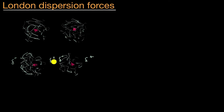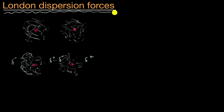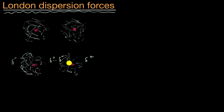We already had a randomly occurring dipole on the left-hand side, but then that would have induced a dipole on the right-hand side. A dipole is just when you have the separation of charge — positive and negative charges at two different parts of a molecule or an atom. In this situation, these two atoms are going to be attracted to each other. This attraction that happens due to induced dipoles is exactly what London dispersion forces is all about. You can also call London dispersion forces induced dipole-induced dipole forces. They become attracted because of a temporary imbalance of electrons that induces a dipole in the neighboring atom or molecule.